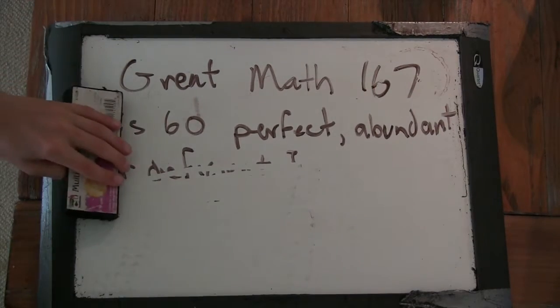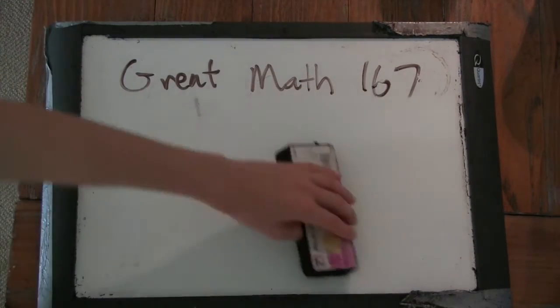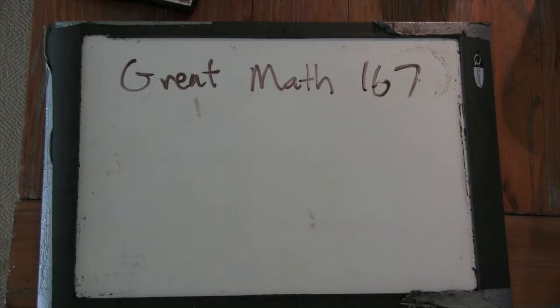Alright, so now that we know what we're talking about, is 60. Perfect, abundant coordination.